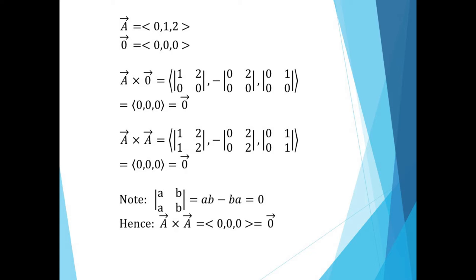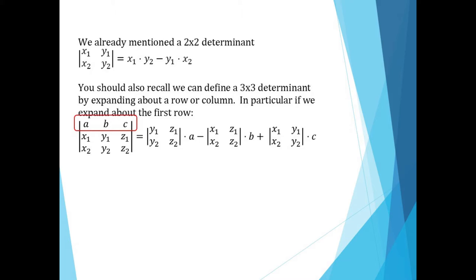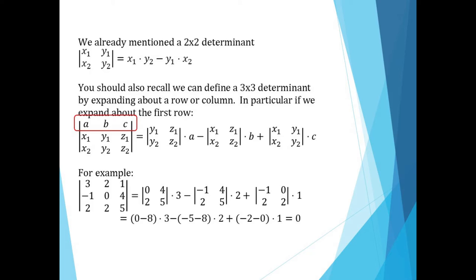We can actually extend our determinant idea a bit further by looking at 3x3 determinants. We use the method of Laplace to expand about the top row. If the top row is a, b, and c, the second row is vector a and the third row is vector b, then we get a, b, and c times exactly the same three determinants that occurred in our 2x2 definition. A quick example is shown here, expanding about the top row 3, 2, and 1: we get 3 times our first 2x2, the opposite of 2 times our second 2x2, and finally 1 times our third 2x2. If only numbers are involved, we get a scalar, so in this case we calculate and combine everything to get 0.